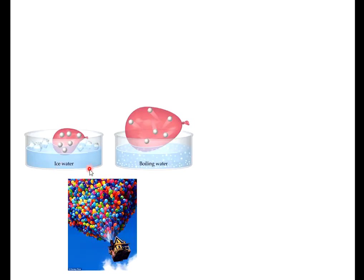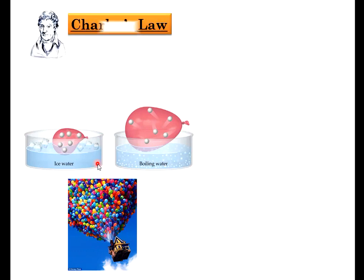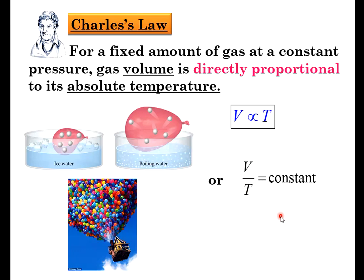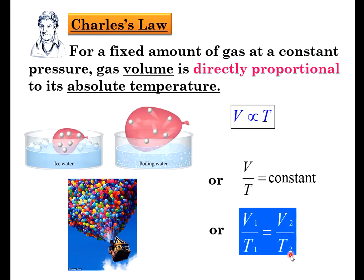Next, looking at this picture - in ice water, the balloon is actually smaller in size, but in boiling water, the balloon is bigger in size. The balloon is already sealed, so we cannot add volume in. According to Charles' Law, for a fixed amount of gas at a constant pressure, gas volume is directly proportionate to its absolute temperature. So volume is directly proportionate to temperature - as temperature increases, volume increases. Or V over T is constant, and for two conditions: V1 over T1 equals to V2 over T2.